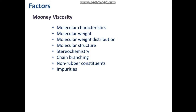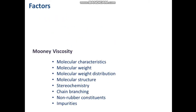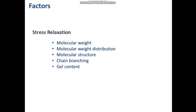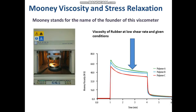The factors that affect Mooney viscosity of natural rubber include: molecular weight and molecular weight distribution, molecular structure — stereochemistry and chain branching — as well as non-rubber constituents such as proteins, lipids, carbohydrates, and metal ions, and finally impurities of natural rubber. The factors that affect stress relaxation properties — meaning the elastic response — include molecular weight, molecular weight distribution, molecular structure, chain branching, and gel content.